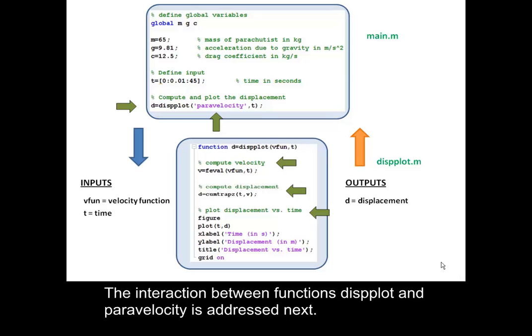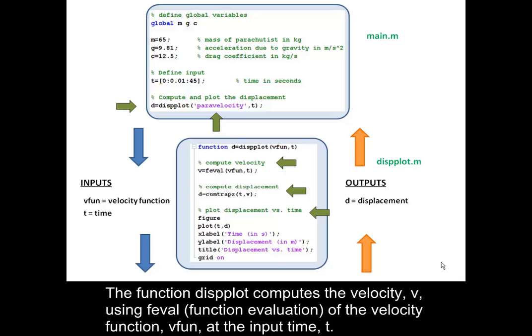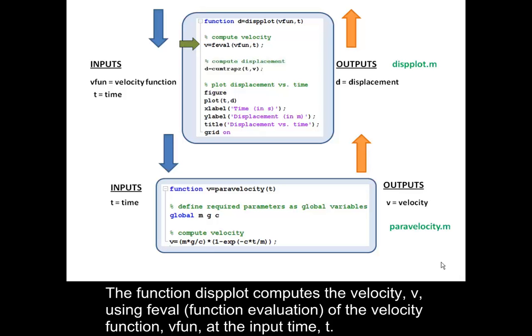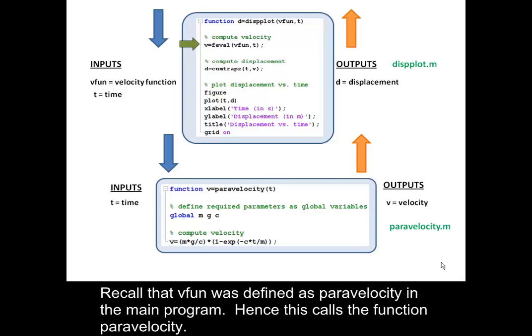The interaction between functions DISPLOT and PARA VELOCITY is addressed next. The function DISPLOT computes the velocity V using FEVAL (Function Evaluation) of the velocity function VFUN at the input time T. Recall that VFUN was defined as PARA VELOCITY in the main program. Hence, this calls the function PARA VELOCITY.